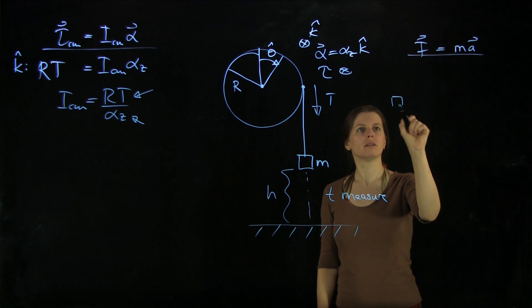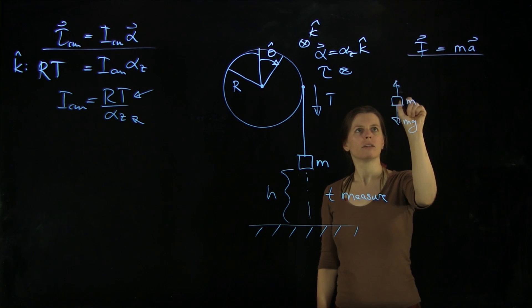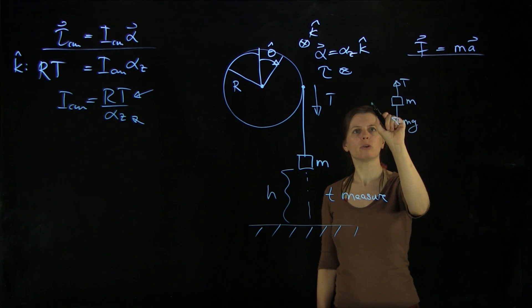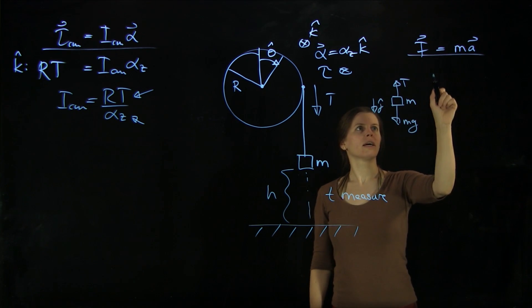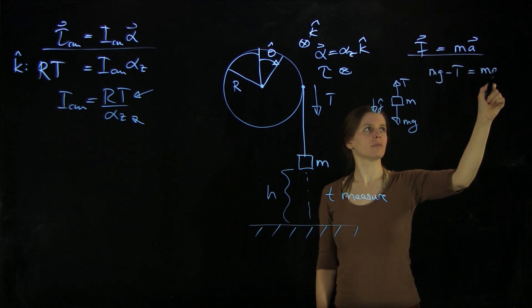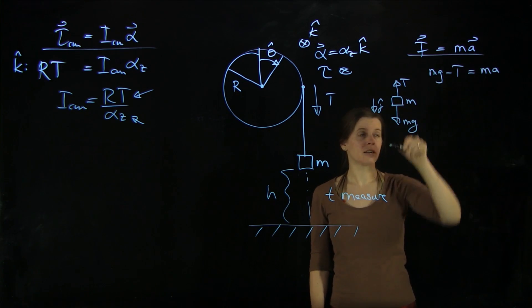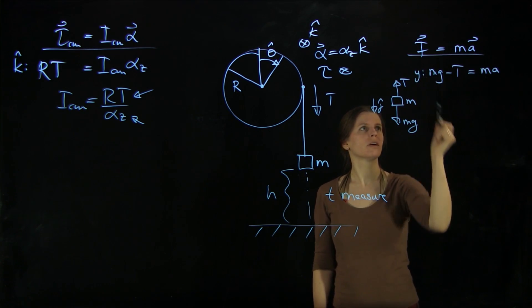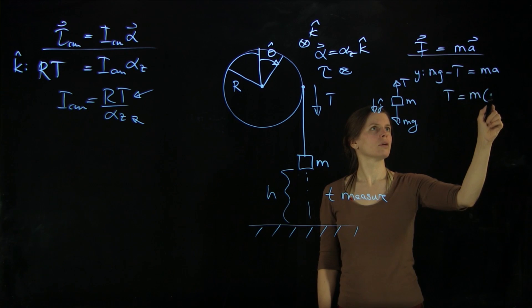So we have our little mass m here. Gravity is acting on it. And we have this tension force here. And we're going to put j hat down. So we're going to get mg minus T equals ma. It's only going to go in the y direction. So we can solve this for T = mg minus ma.